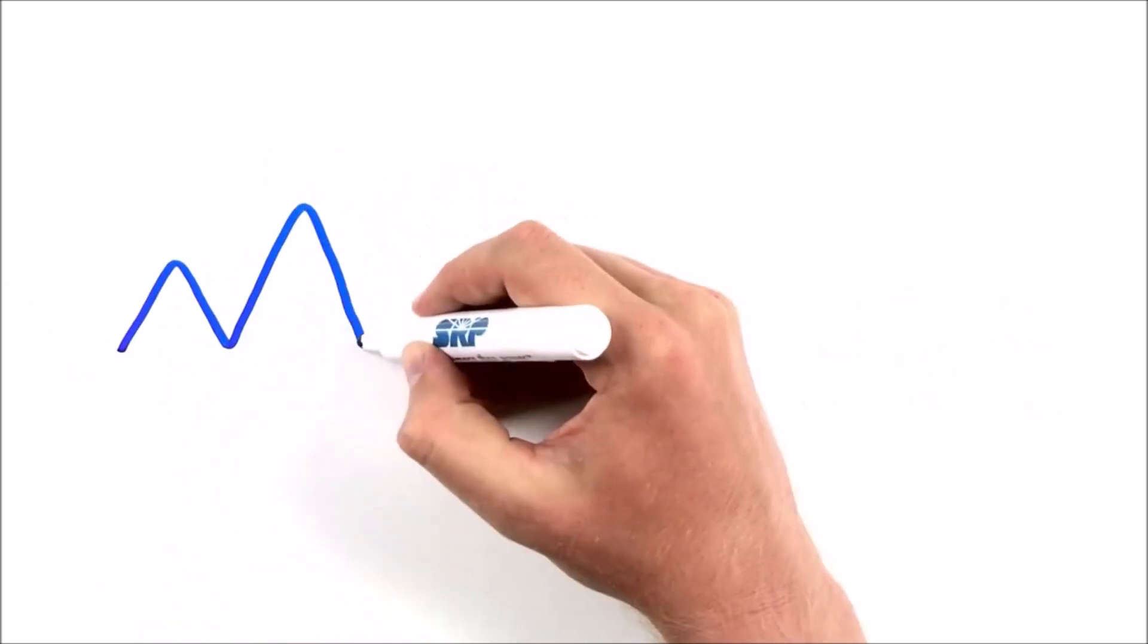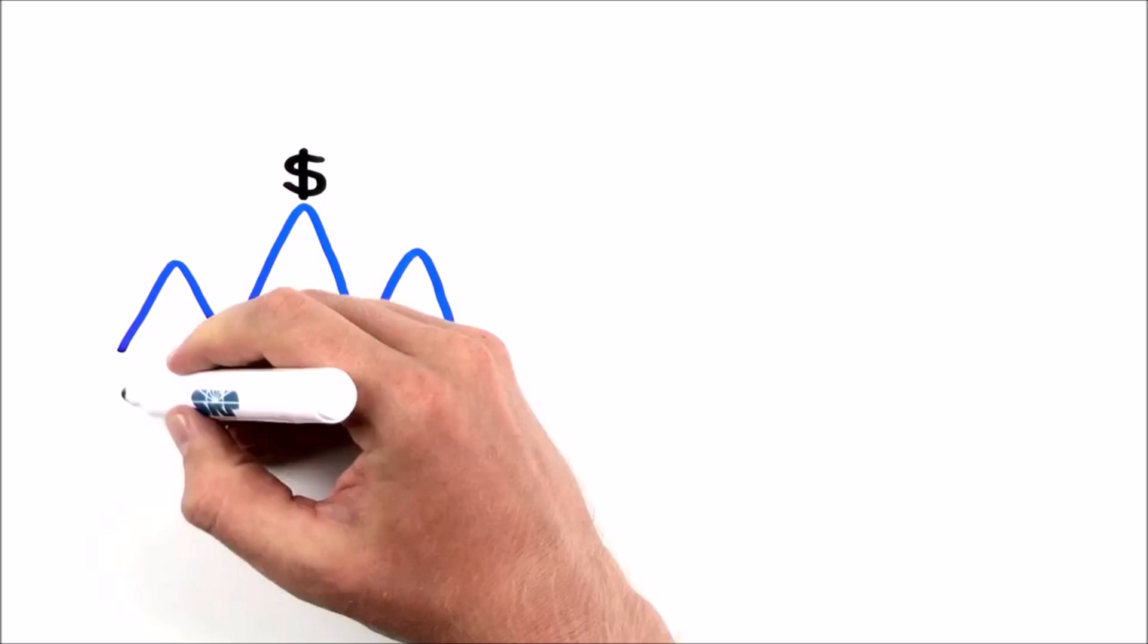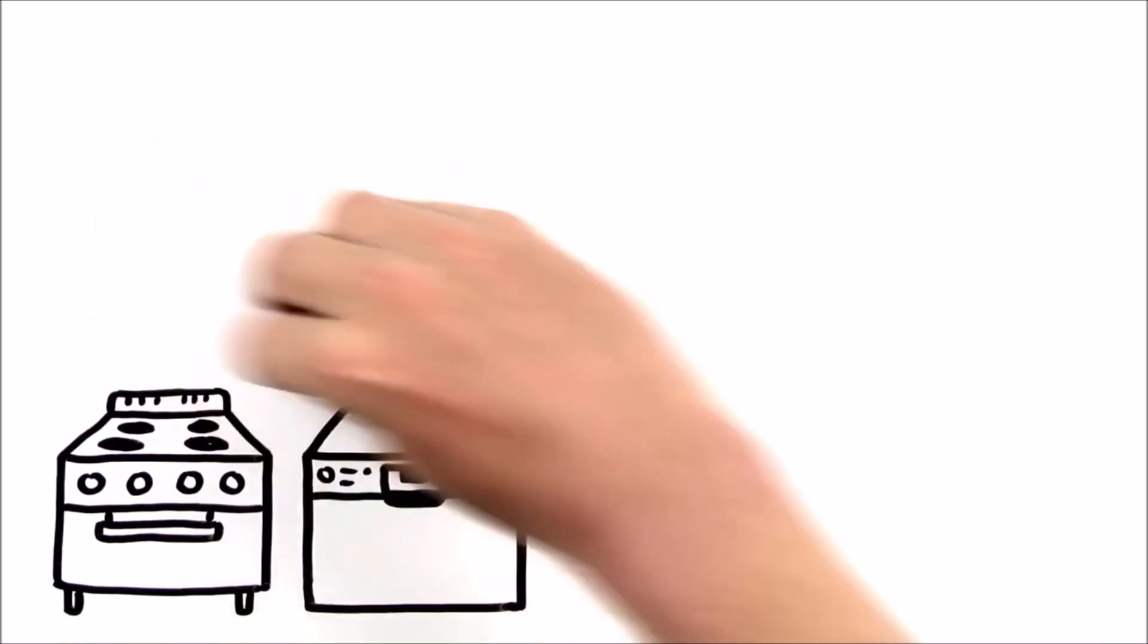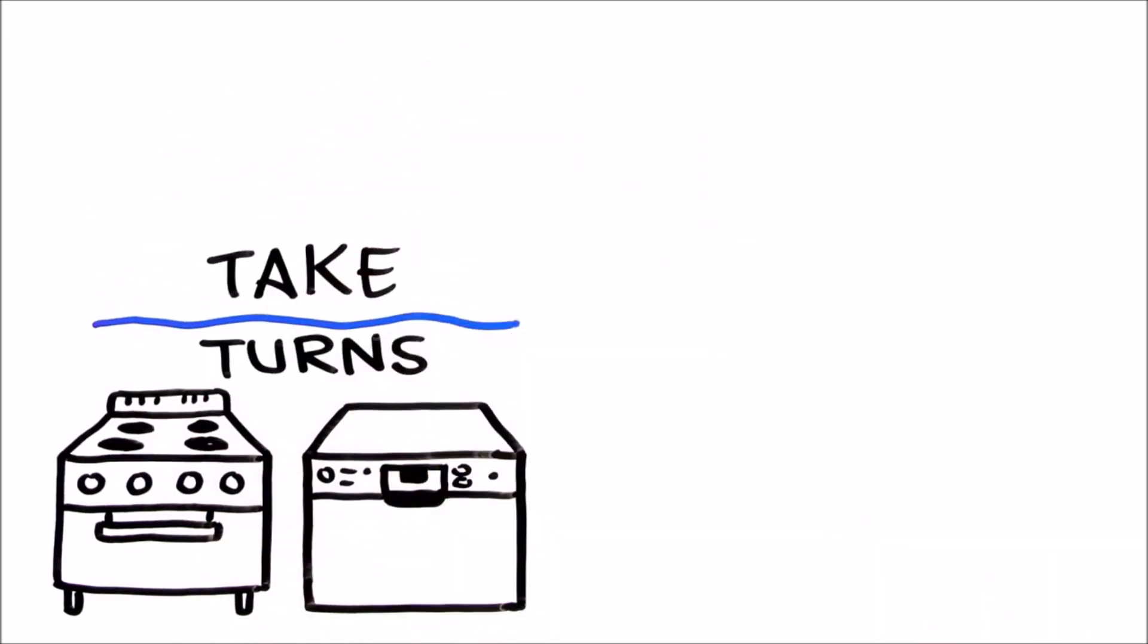So, to reduce your electricity peak and save money, think about your appliances – say, an electric range and a dishwasher. Then, make them take turns instead of running them at the same time.